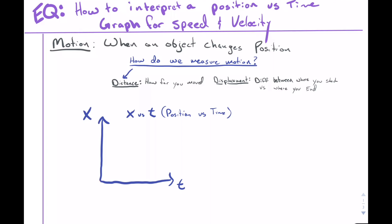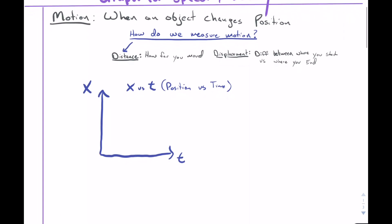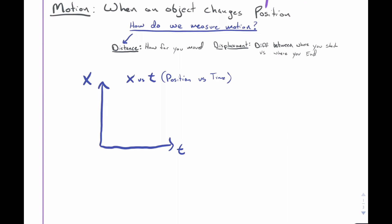If you just walk in a straight line, your distance and displacement are going to be the same thing. But if you ever turn around or come back at all, those two can be different.